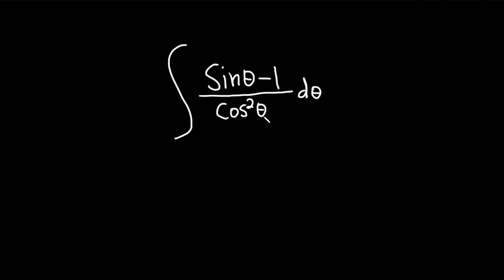Hi, in this problem we are going to integrate sine of theta minus 1 over cosine squared of theta with respect to theta.